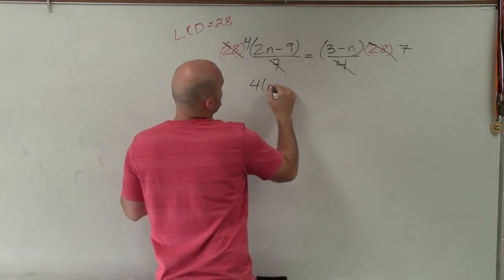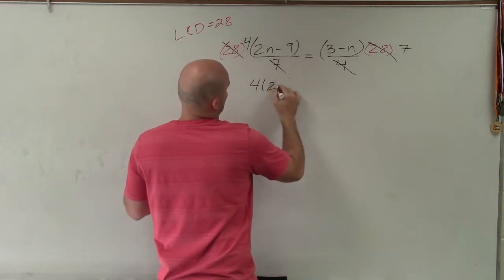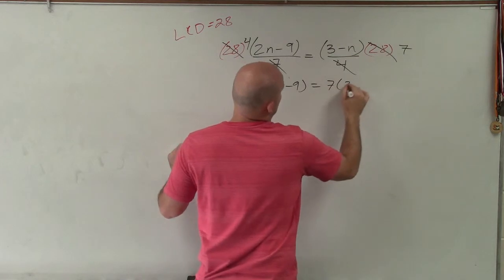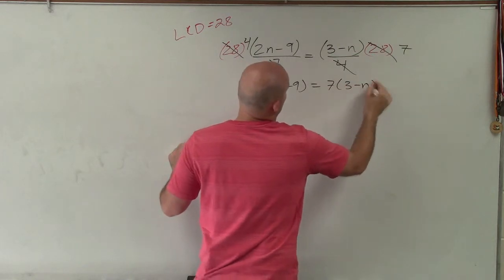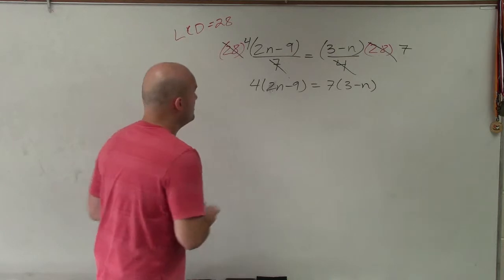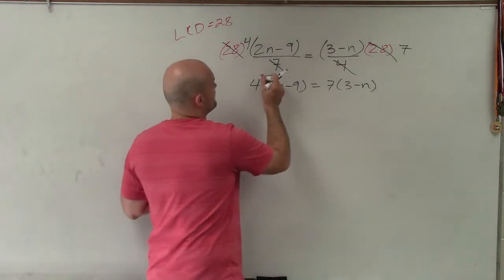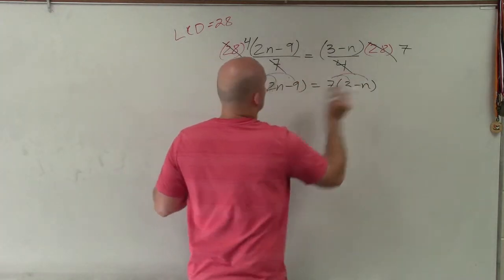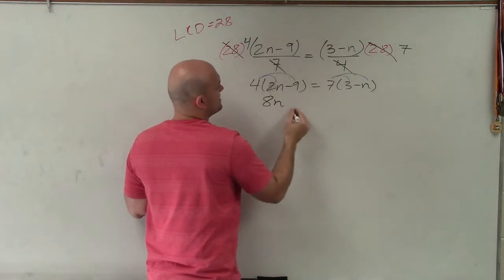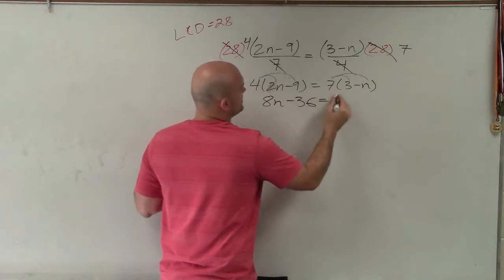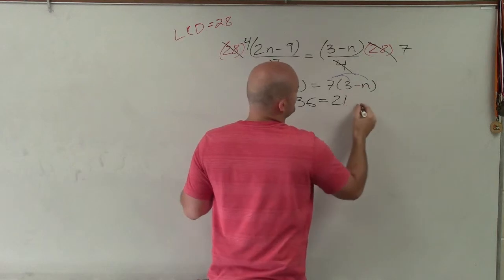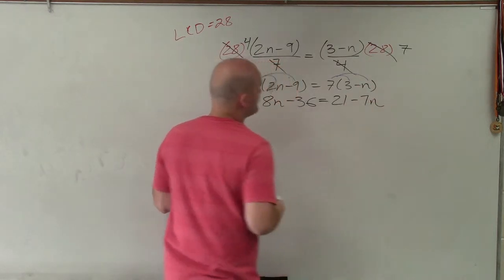So therefore, I have 4 times 2n minus 9 equals 7 times 3 minus n. Now we need to apply our distributive property. So 4 times 2n is 8n, 4 times negative 9 is negative 36, equals 7 times 3 is 21, and 7 times negative n is negative 7n.